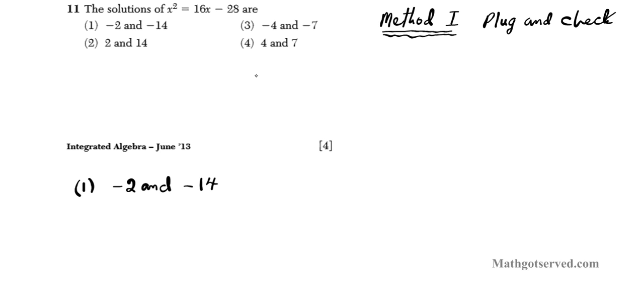We're going to be plugging it into the equation x squared equals 16x minus 28. Let's test x equals negative 2. Now, both answers must satisfy the equation in order for that to be a solution. If one fails, the second doesn't count anymore.